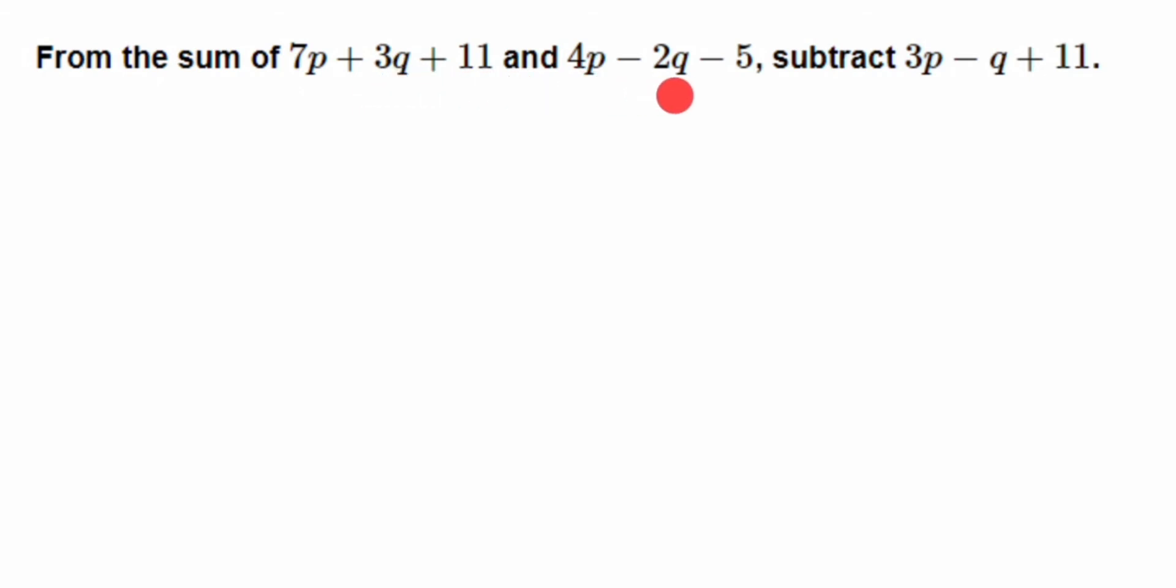minus 5, subtract 3p - q + 11. This means they're asking us to first add the two expressions - this expression and this expression. After adding, whatever result we get, from there we have to subtract the last expression. So that is what they're asking us to do.